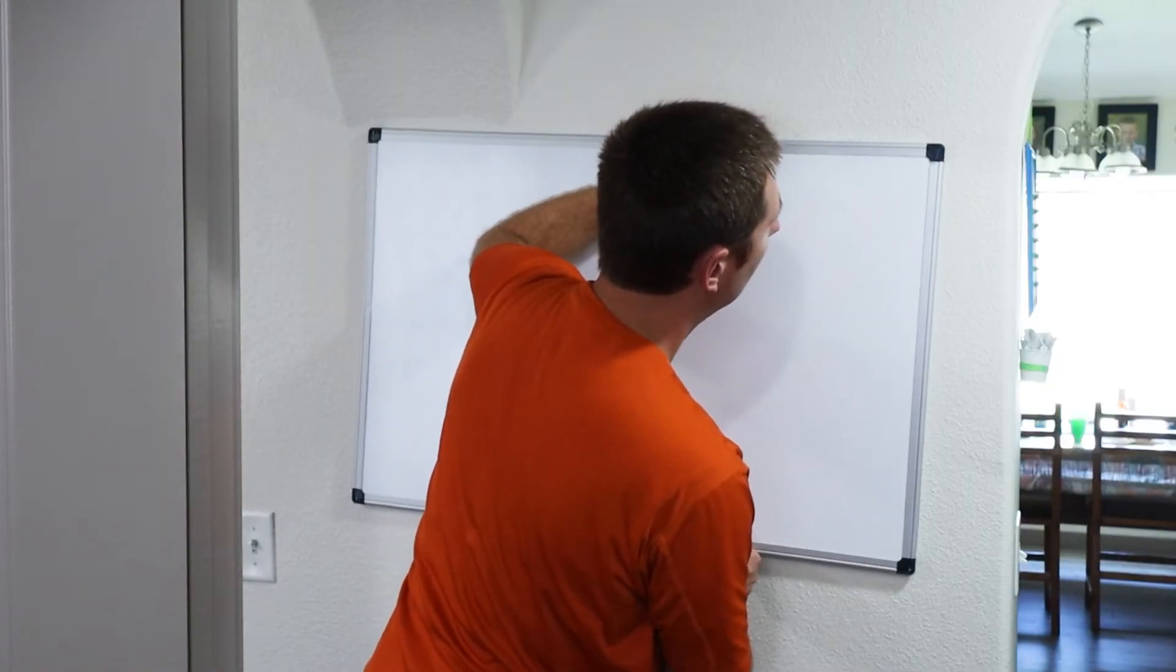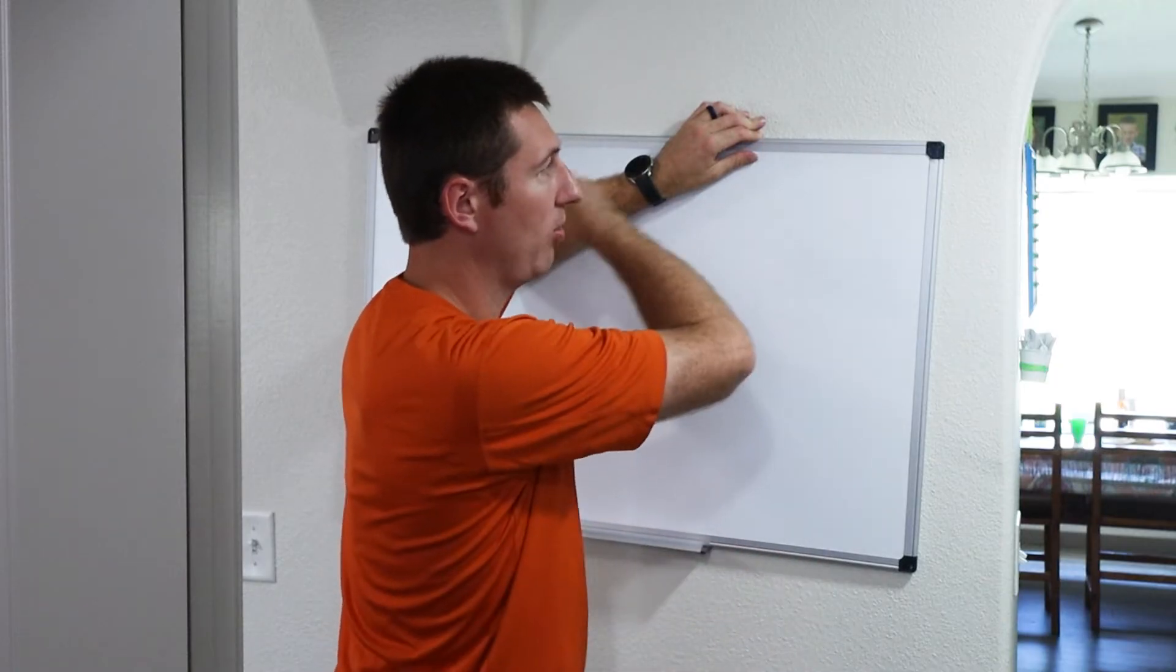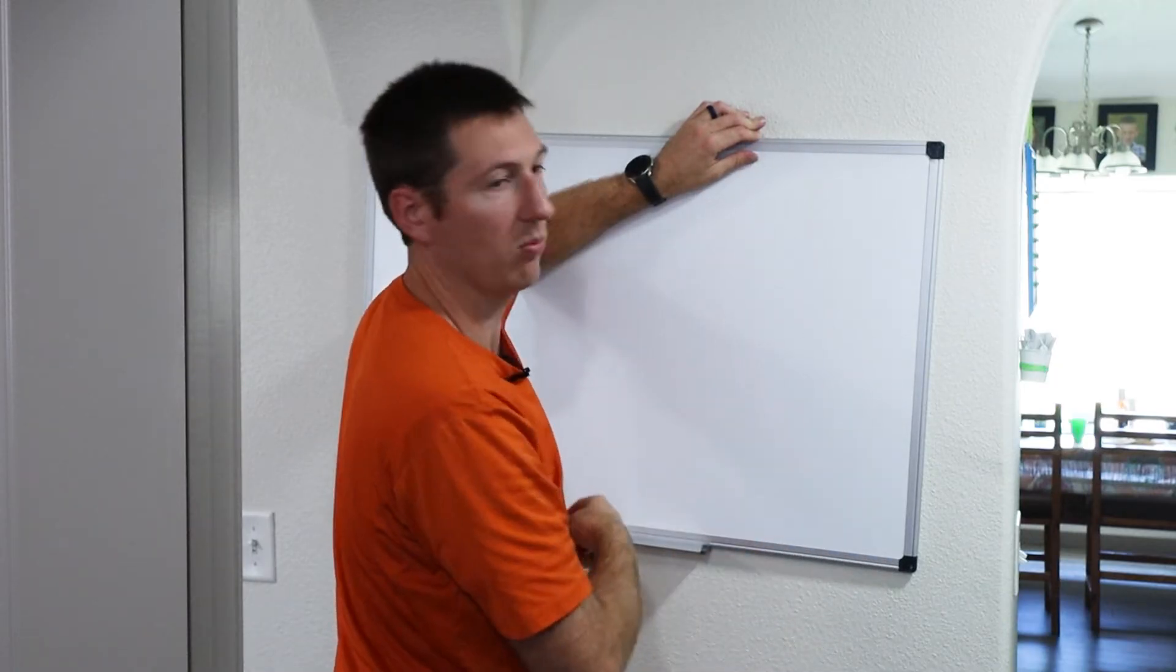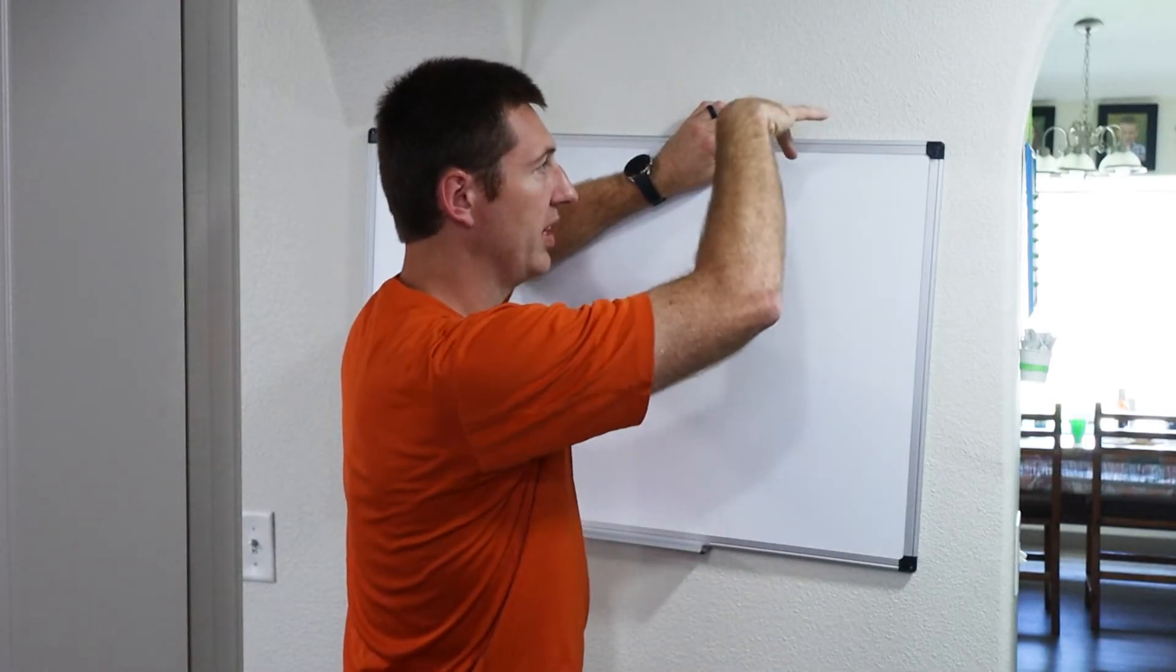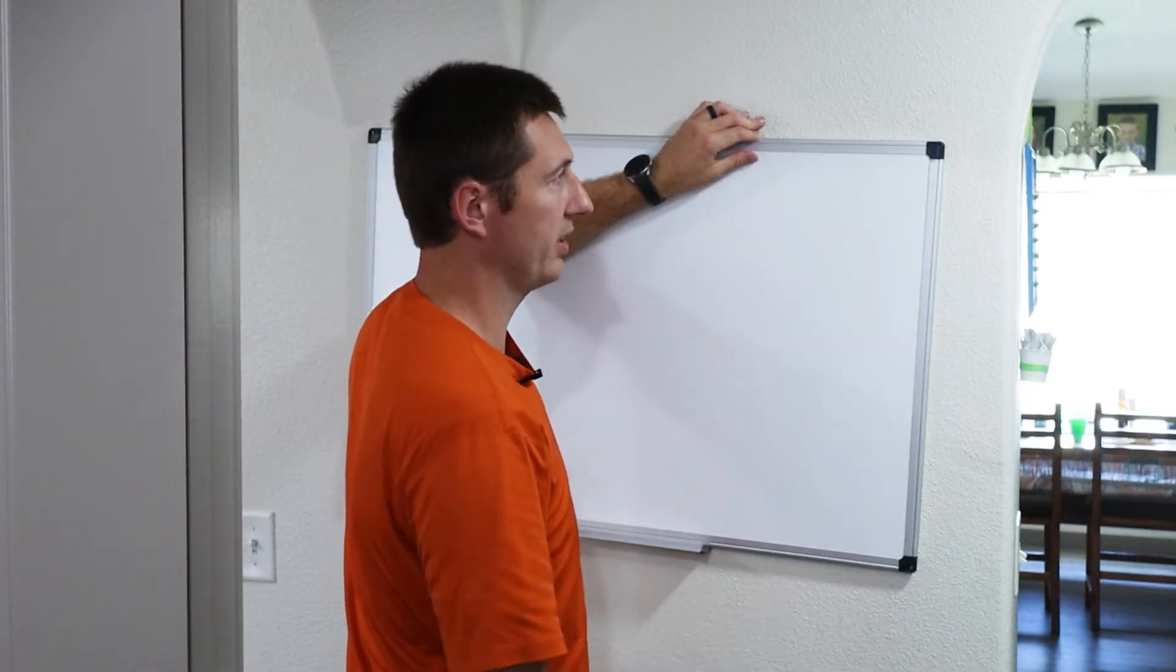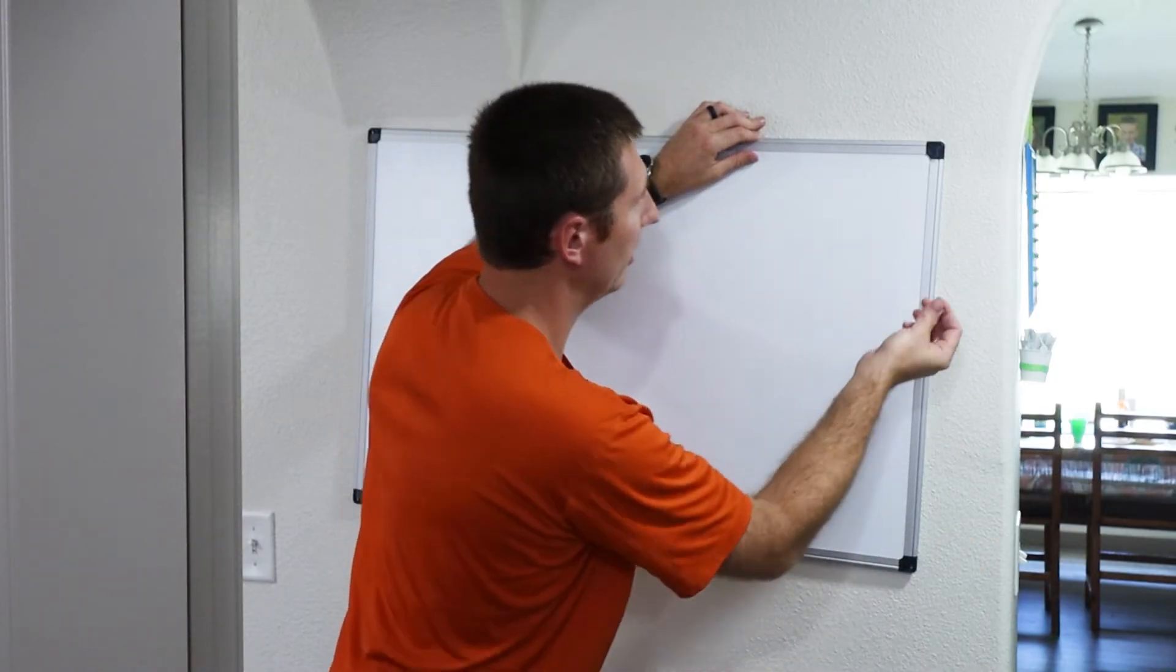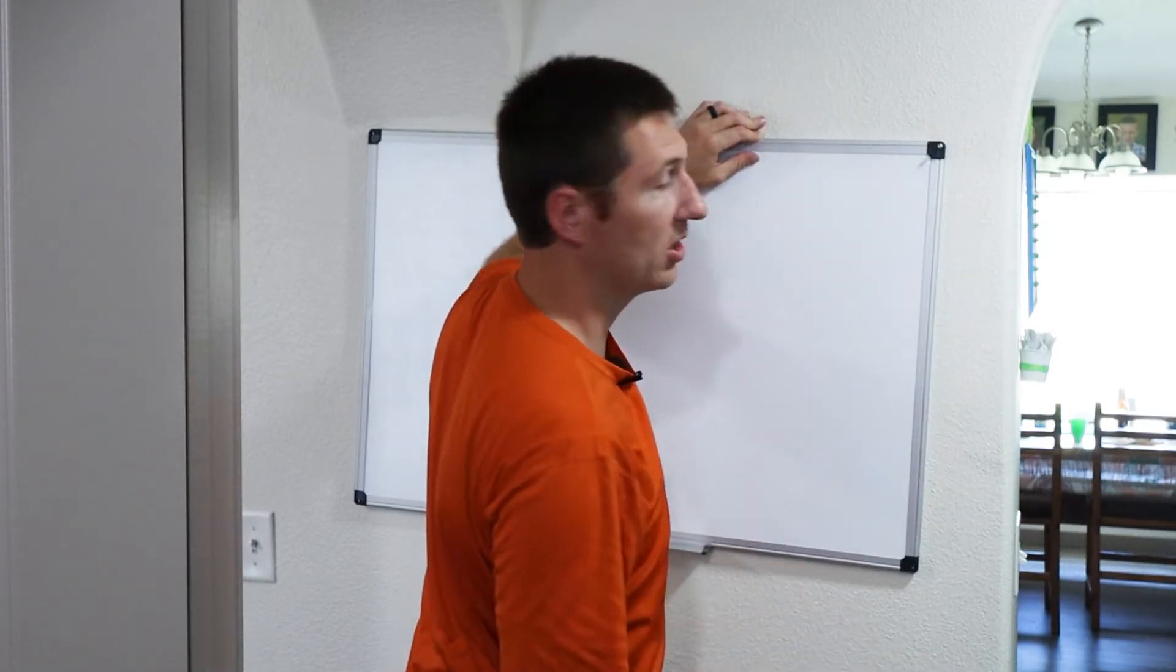Alright, so line it up where the hole is going to be. I like putting my top ones in first and then I'll do the bottom ones second. The reason why I do that is once the top ones are in it's going to hang itself there and you don't have to worry about it falling forward or flipping around and falling down sideways. So let's put our top one in and again this is going directly into a stud.